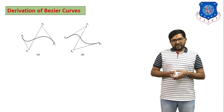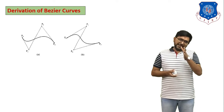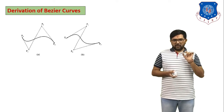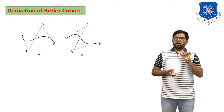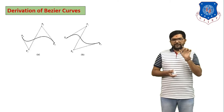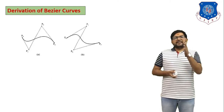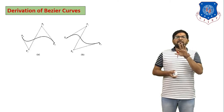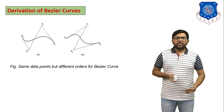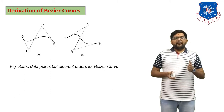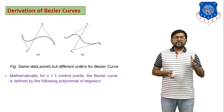Here are two examples of Bezier Curves with four control points P0, P1, P2, P3. The second figure shows a different shape of Bezier Curve using the same control points but a different order of the Bezier Curve.